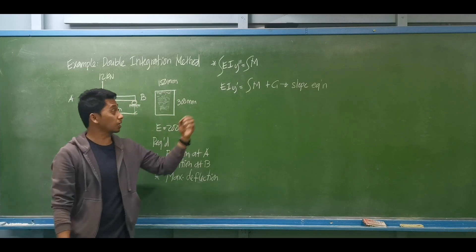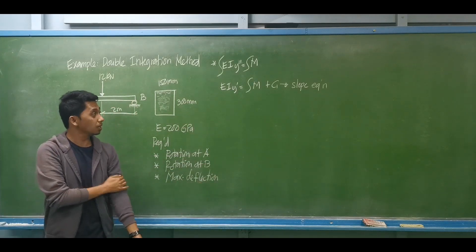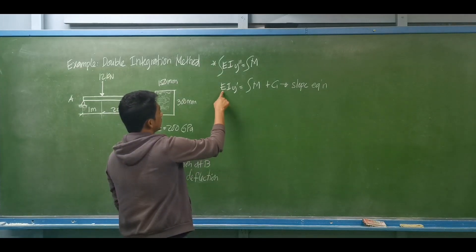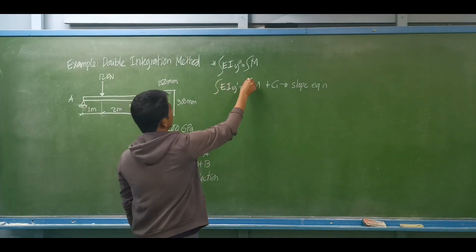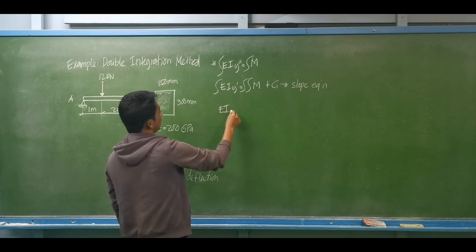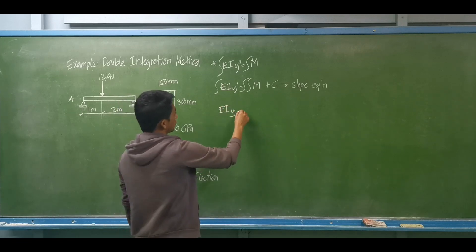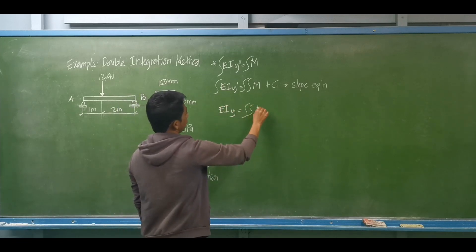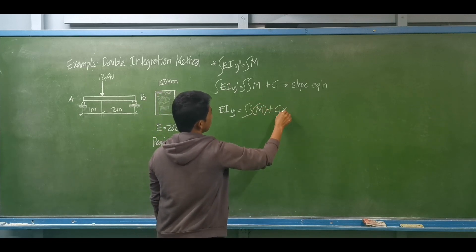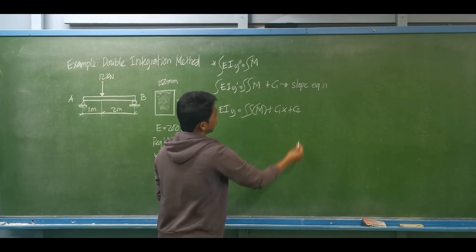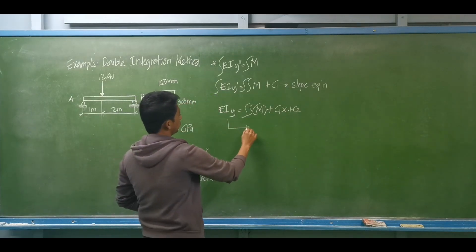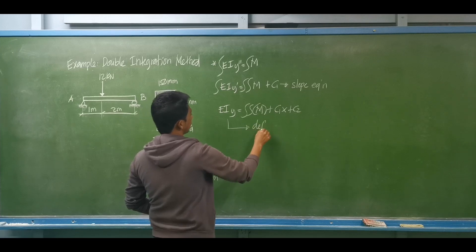The first integral of the moment equation gives the slope equation. Then if you integrate again — integrate both sides — this becomes EI y, equal to the double integration of the moment equation, plus C1x plus C2, the second arbitrary constant. This will be your deflection equation.